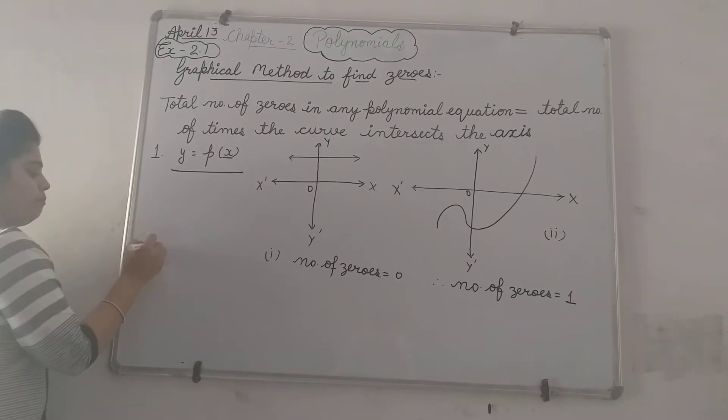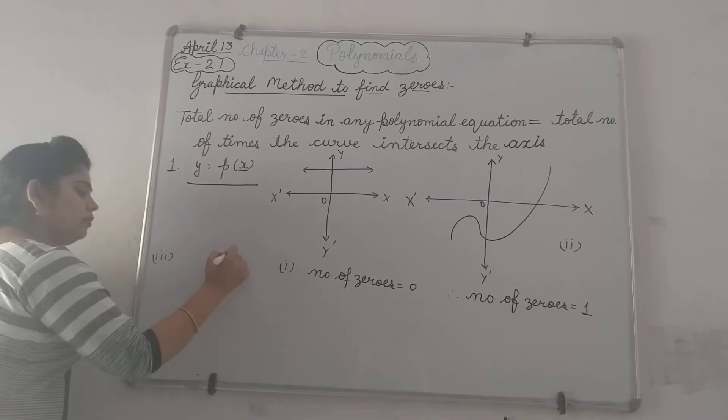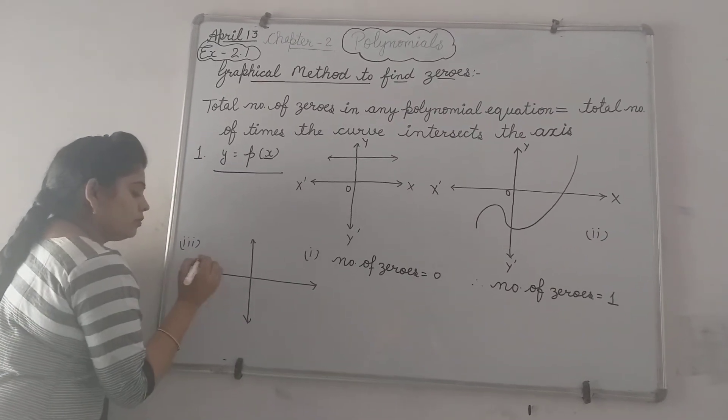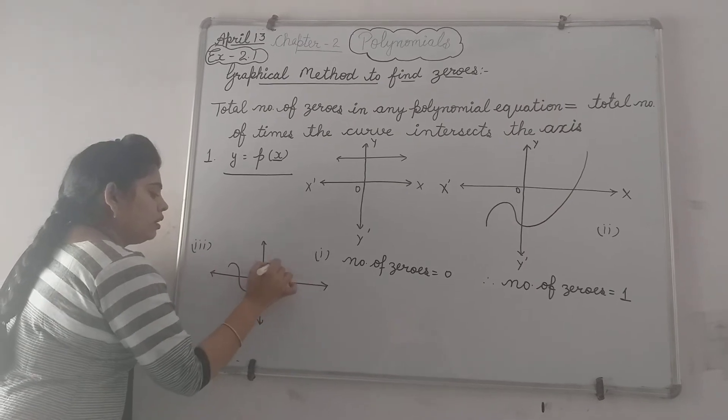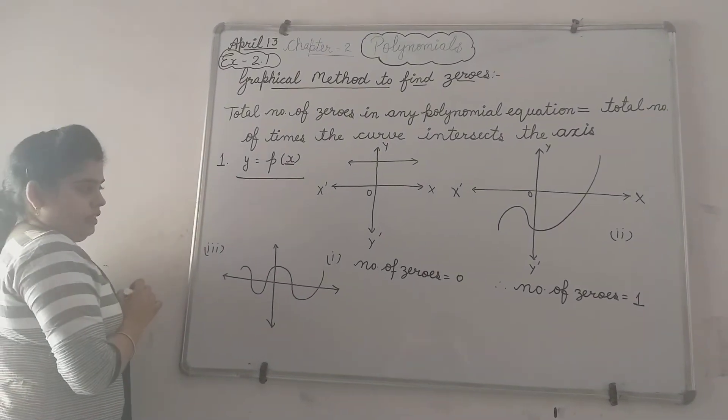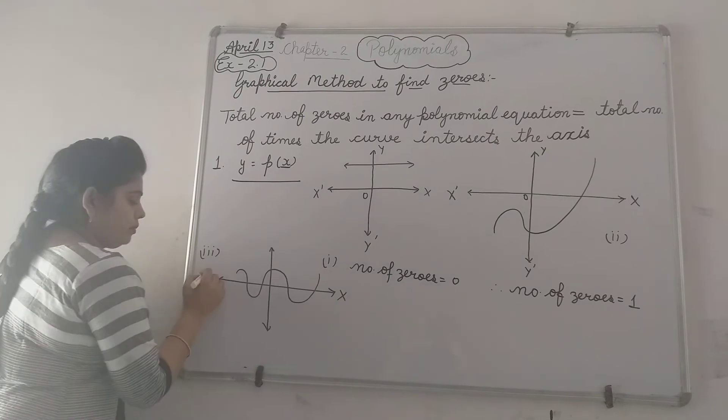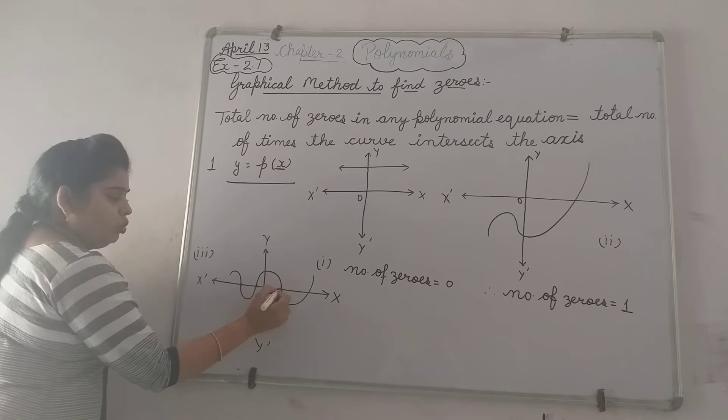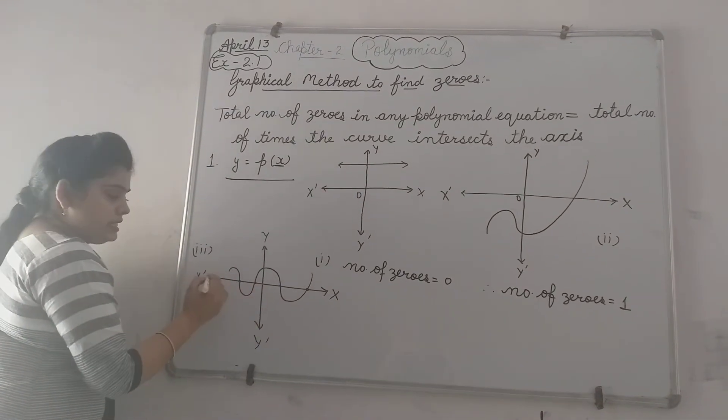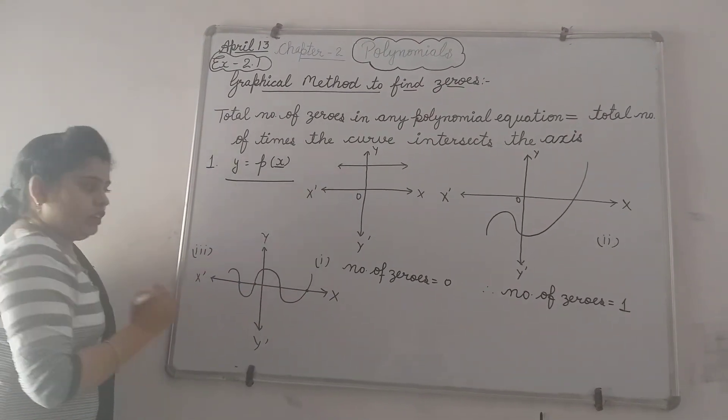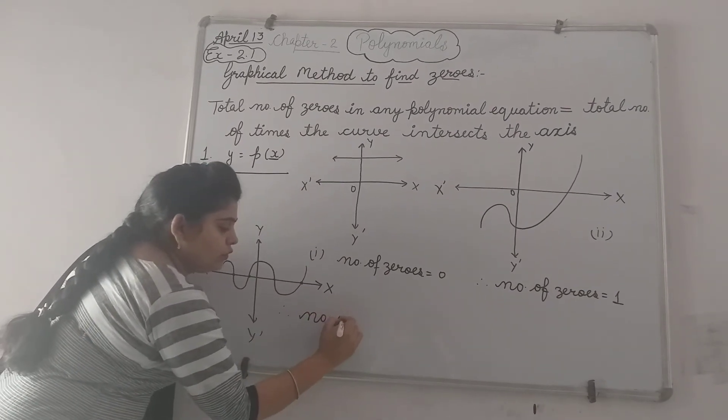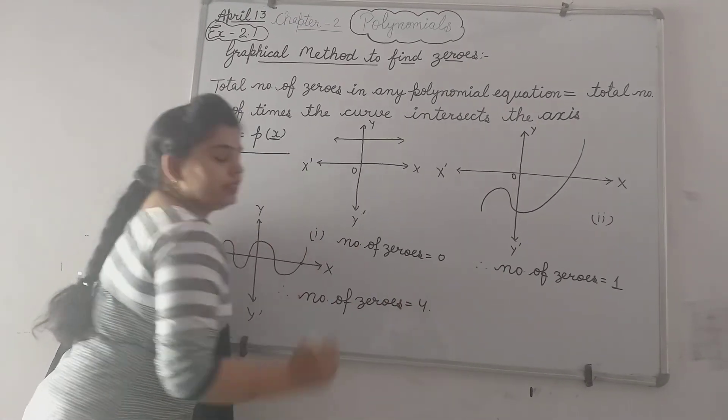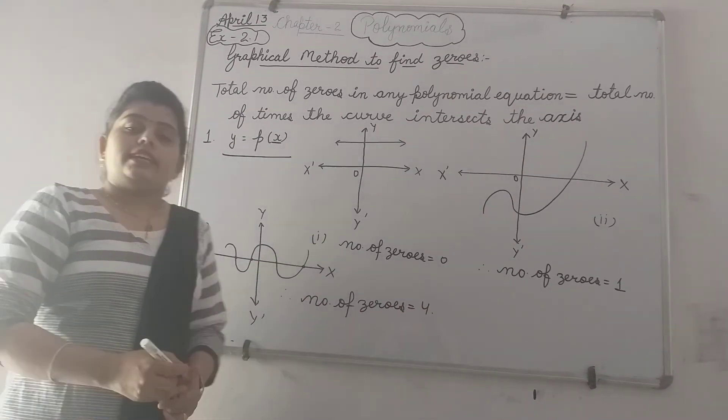Consider one more example. If this type of curve is given, now count 1, 2, 3, 4. This curve is intersecting x axis four times. So number of zeros will be four. That's it. This is our exercise 2.1.